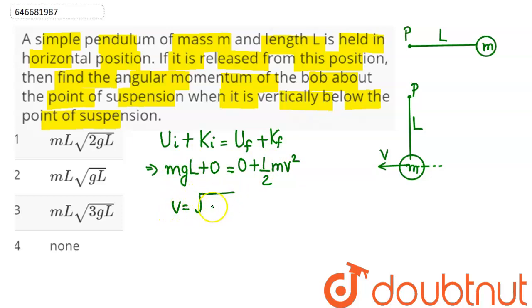Hence we have the value of v as root under 2gL. So angular momentum about the point of suspension can be written here. We have v equal to r omega. Hence omega comes as v upon L. So this is root 2gL by L, gives us root 2g divided by L.